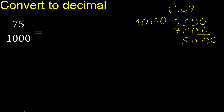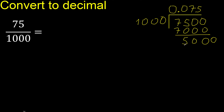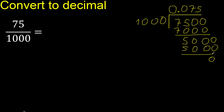Place the decimal point only once. 1000 multiplied by 5 is 5000. Subtract — result is 0, therefore finish.